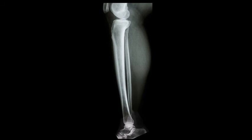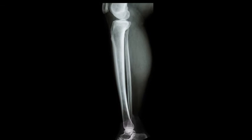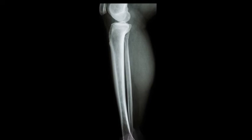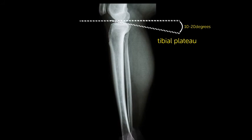Lateral views of the lower leg show the major bones — tibia and fibula — in profile. It is important to understand that the tibial plateau is angled at 10 to 20 degrees.